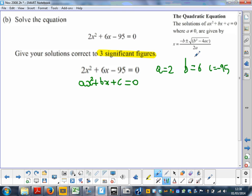All I'm going to do is replace the values. So x equals fraction line minus b, which means -6, plus or minus square root of